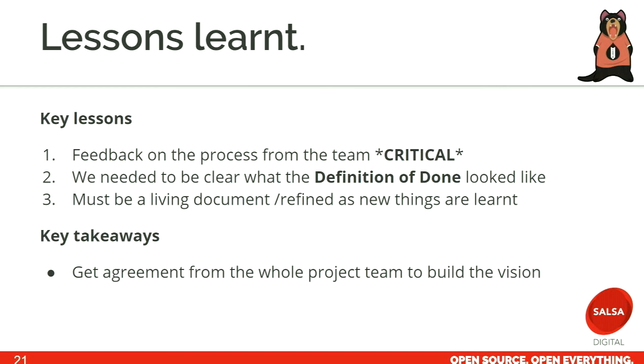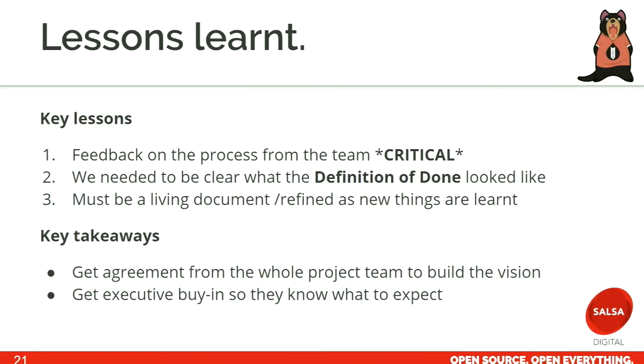Key takeaways: get agreement from the whole project team about the vision. If not everyone is on board, you may find that things don't get done in time or to the quality expectation. That may mean going back to get feedback from the team themselves — they may not agree, but you need to find out why. There may be a technical reason, and that's good, because then you can actually improve the process. Another key thing: we would put that process map up on the wall in the project room. If we had any executive visitors, we'd basically point them to that map to say, this is the stage we're at, this is what we're going to get done next, and this is where we'll be in two or three weeks' time.